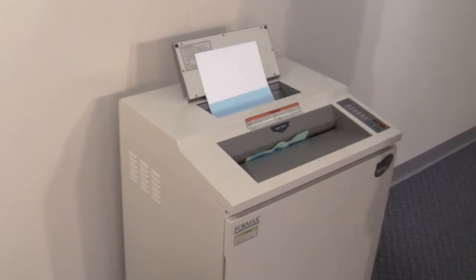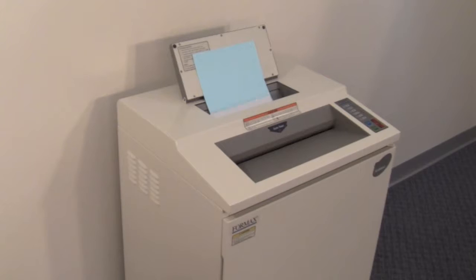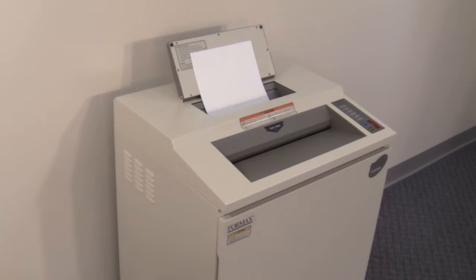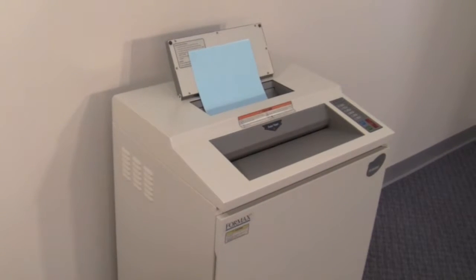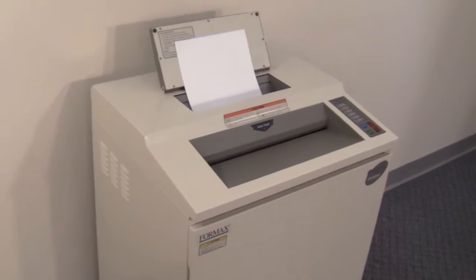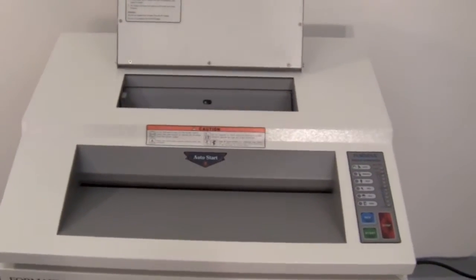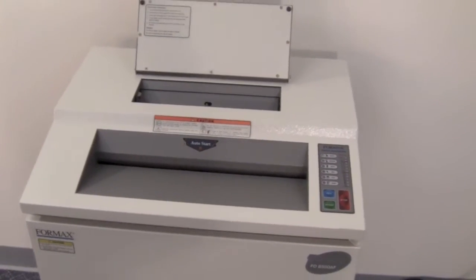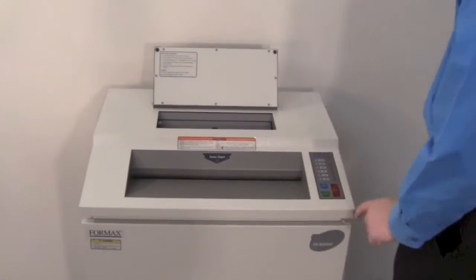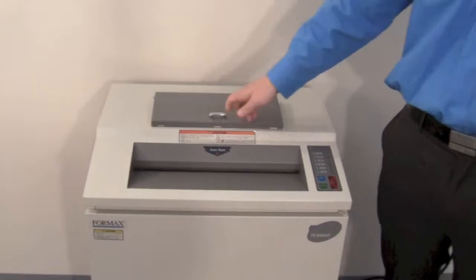Finally, you have the optional automatic oiling system that can be installed by Whitaker Brothers on any shredder. This is virtually mandatory on high-security level 6 shredders, but it's very nice to have on cross-cut and strip-cut models as well. It eliminates the need to manually oil your shredder because it does so automatically through a reservoir that's drawn from the side.